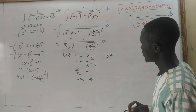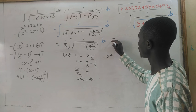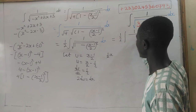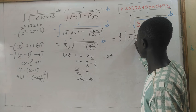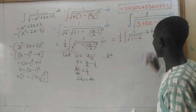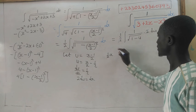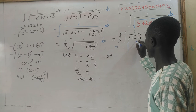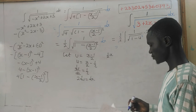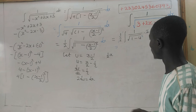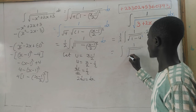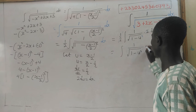Performing the substitution, we get one-half times the integral of 1 over the square root of 1 minus u squared, times 2 du. The 2 and the one-half cancel, giving us the integral of 1 divided by the square root of 1 minus u squared, du.